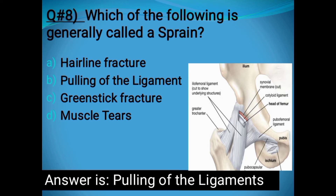Question number eight: Which of the following is the general record of a sprain? Options: Hairline fracture, Pulling of the ligament, Greenstick fracture, or Muscle tears. The correct answer is Pulling of the ligament.